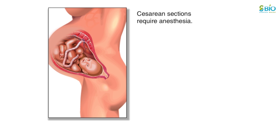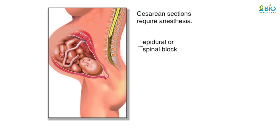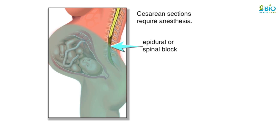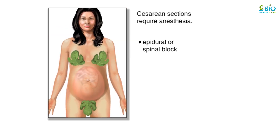Like many surgical procedures, caesarean sections require anesthesia. Usually the mother is given an epidural or a spinal block — both of these will numb the lower body, but the mother will remain awake. If the baby has to be delivered quickly, as in an emergency, the mother may be given general anesthesia, which will make her fall asleep during the surgery.